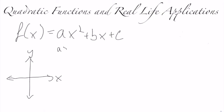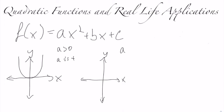If a is greater than 0, or a is positive, the graph would be an upwards u-shape. But it could also be negative — so a less than 0, meaning a is negative — and the graph looks like this, so it's an upside-down u.